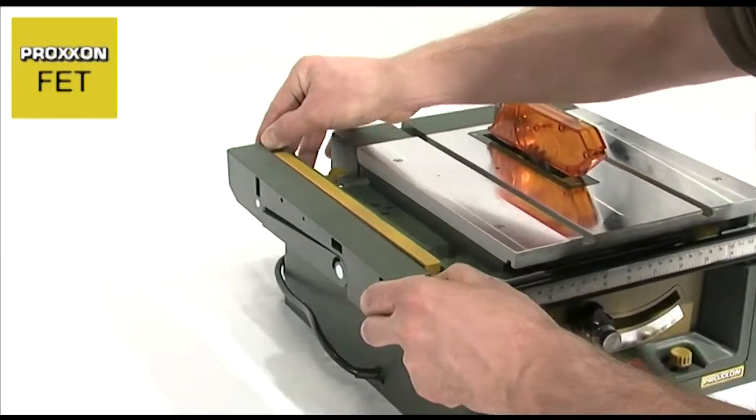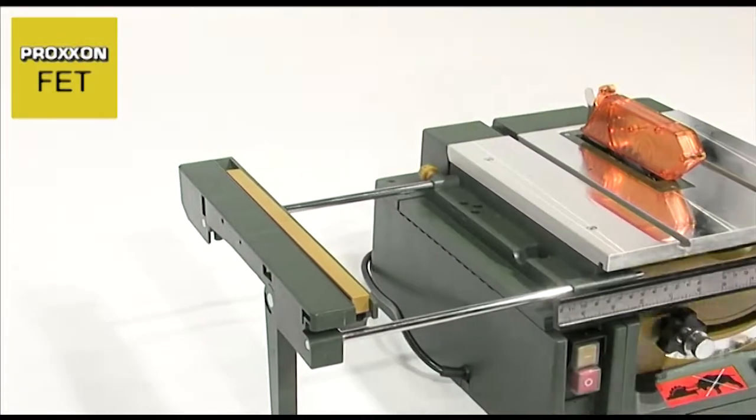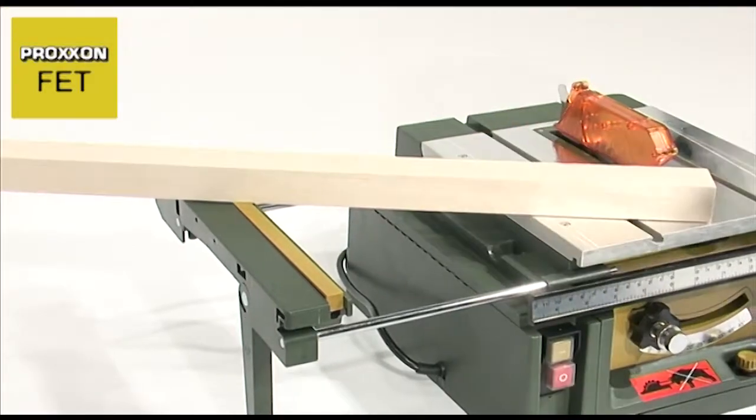And where work pieces are a little longer than usual, simply pull out the table extension with its auxiliary stop. This can then be easily locked in position with a knurled screw.